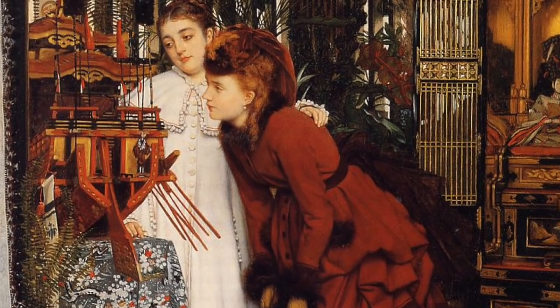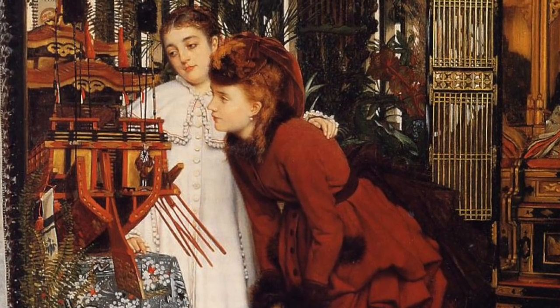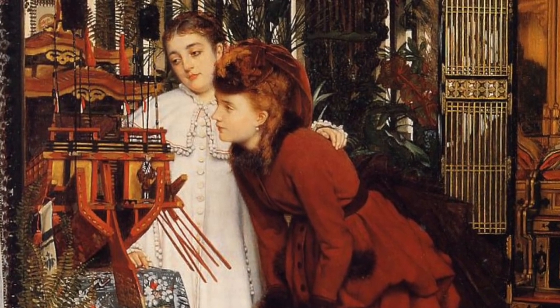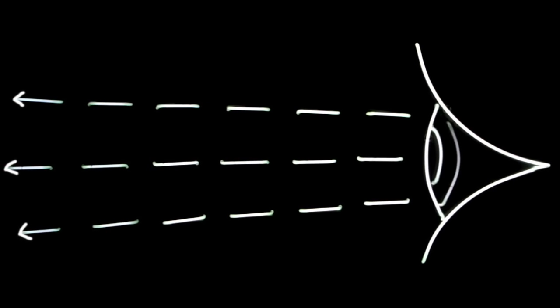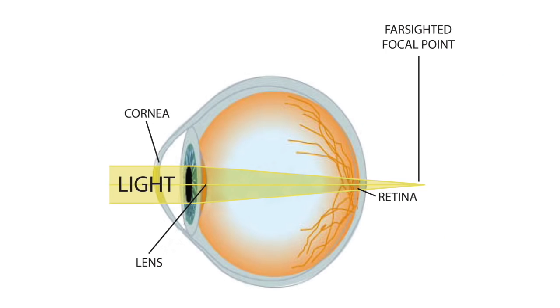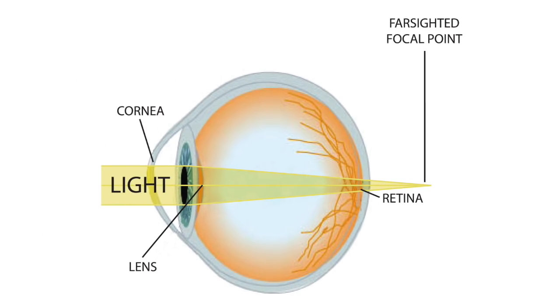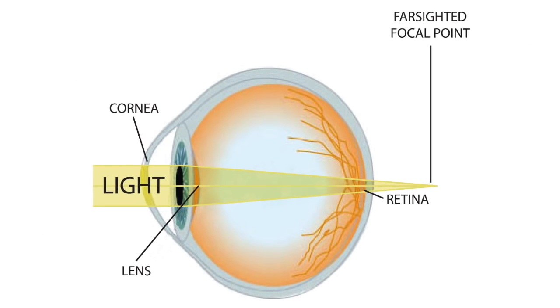Rømer simply reversed the older intuitive idea that understood seeing as analogous to touching. Something, an ocular ray, reaches out like a finger and touches, sees the object seen. Rømer assumed rays come not from the eye but to the eye, and that too is intuitive.